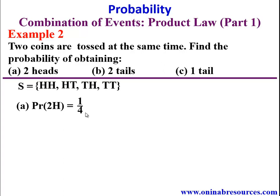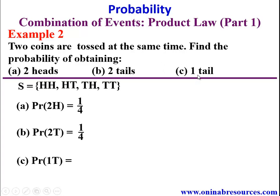Without using the sample space: P(head from first coin) = 1/2 and P(head from second coin) = 1/2, so 1/2 × 1/2 = 1/4. For part (b), P(two tails): only one outcome contains two tails, so P = 1/4. For part (c), P(one tail): there are two outcomes with exactly one tail, giving 2/4 = 1/2. That is the end of Example 2.